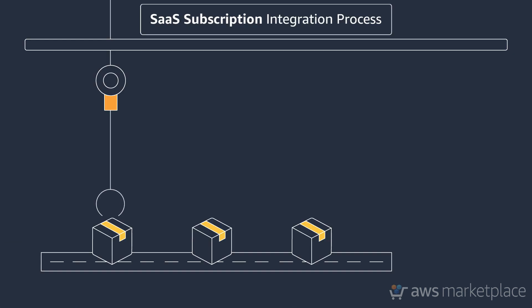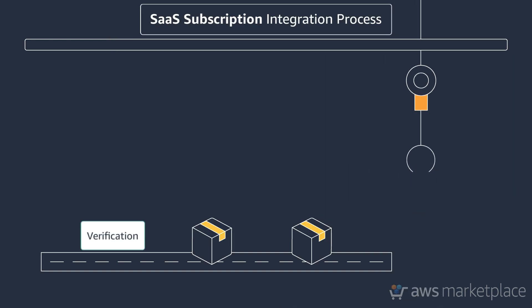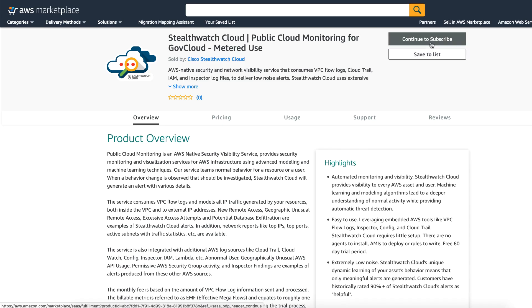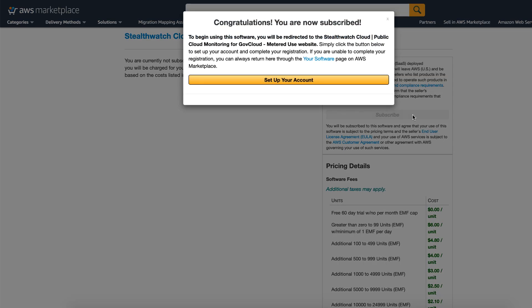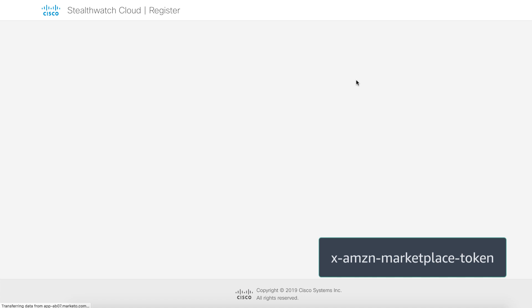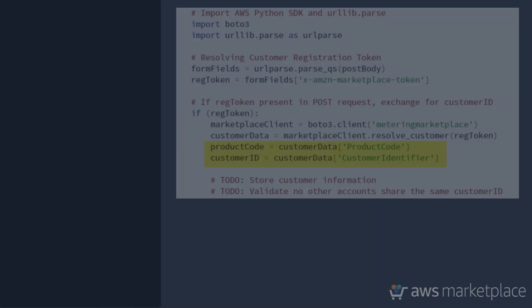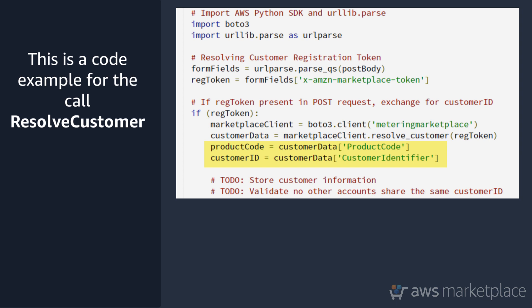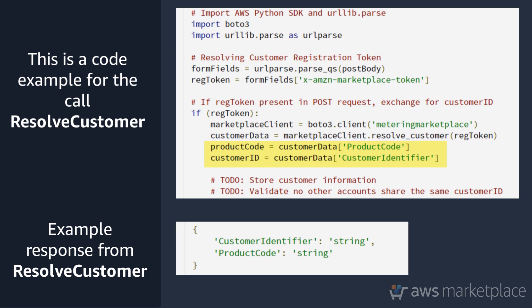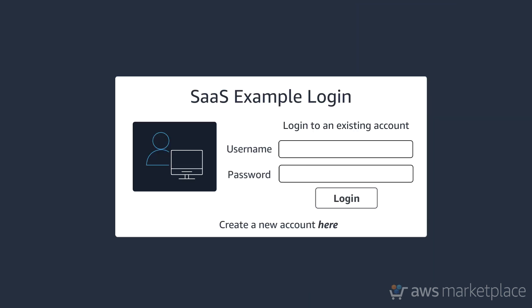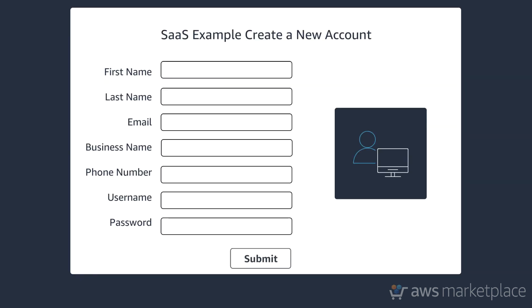Let's first start with SaaS subscriptions. Once a customer completes their Marketplace subscription to your product, they will be prompted to set up an account, which will redirect them to your SaaS fulfillment URL. The customer's browser sends a POST request to this URL, which contains a token parameter. With the token, call ResolveCustomer in the Marketplace metering service to return the product code and the customer identifier, which represents an AWS customer. The customer identifier should be stored so that you can make future API calls on behalf of that customer. At this point, the customer should see your landing page and be given the option to either register and create a new account, or log in to an existing one. The customer is now ready to begin using your application.